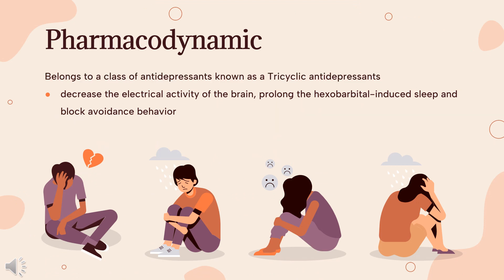Pharmacodynamics: Similar to other tricyclic antidepressants, Doxepin was shown in preclinical trials to decrease the electrical activity of the brain, prolong hexabarbital-induced sleep, and block avoidance behavior without affecting the conditioned emotional response. At high doses, it also produces central nervous system depression. Doxepin is known to cause antidepressant, sedative, and anticholinergic effects. At high doses, its anticholinergic and antiadrenergic properties are most prevalent, which limit its efficacy. These effects are observed at high doses, where its affinity for the H1 histamine receptor is lost and its binding to other receptors is observed. The maximal antidepressant effects are present around 2 weeks following initiation of therapy; however, the sedative effects, usually used for insomnia or anxiety, are observed immediately after administration.